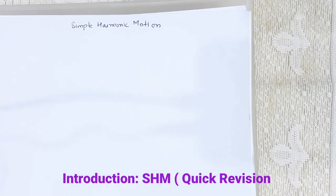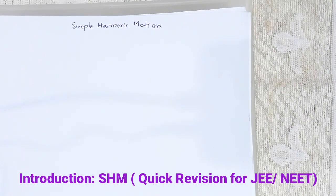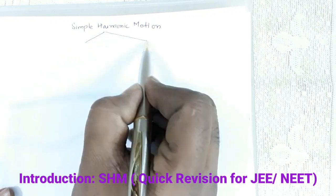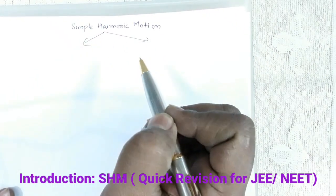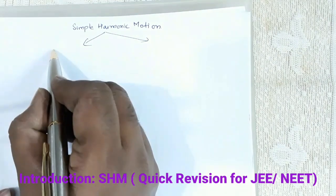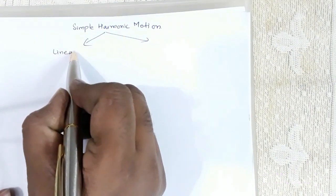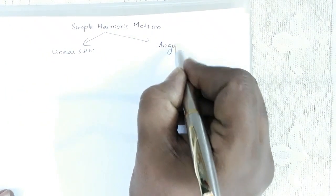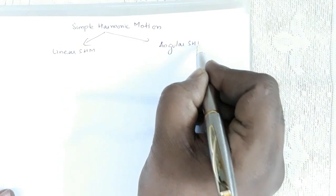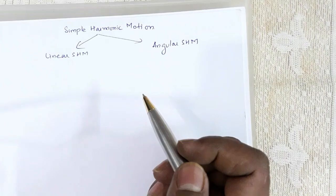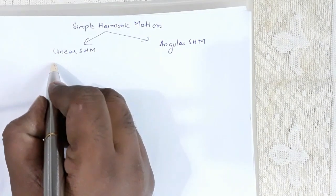Hello students. In this video I am going to give a brief introduction on simple harmonic motion. There can be two possible types of simple harmonic motion: one is the linear SHM and the other one is the angular SHM.